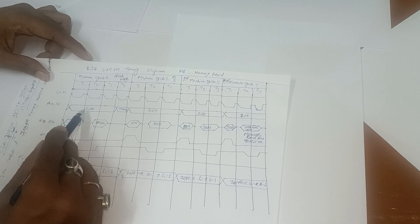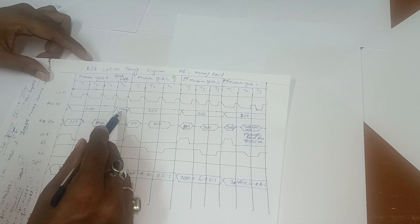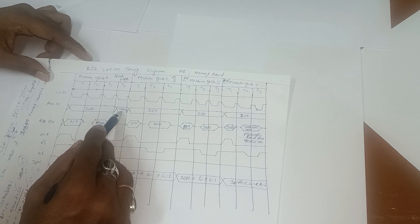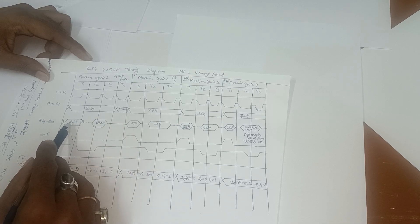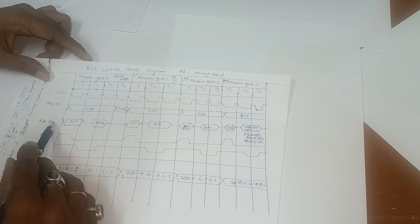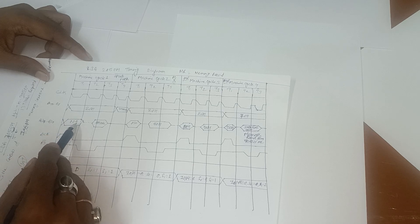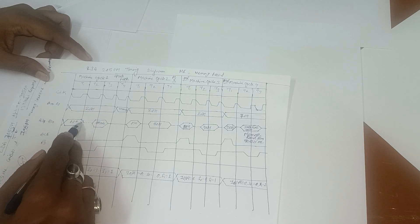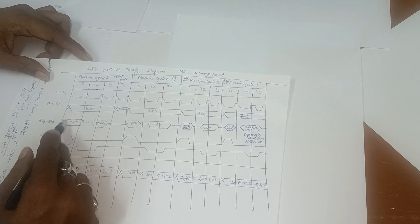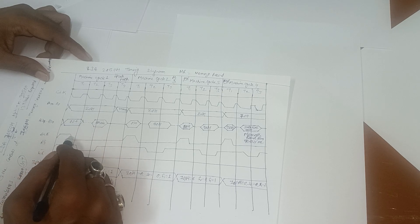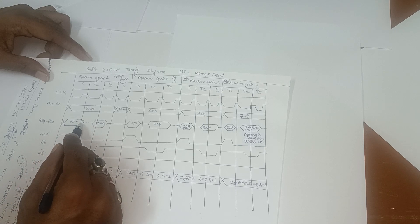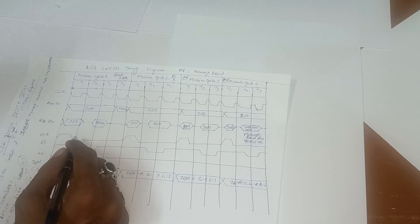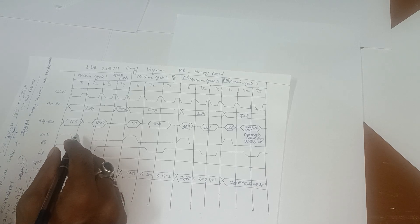On address lines A8 to A15, the higher-order address byte 20H is present during T1 to T3. T4 is unspecified for decoding. On address lines A0 to A7, the full address 2000H lower byte is present. The ALE signal is enabled in the T1 state — ALE is always enabled in the first T state of any machine cycle.